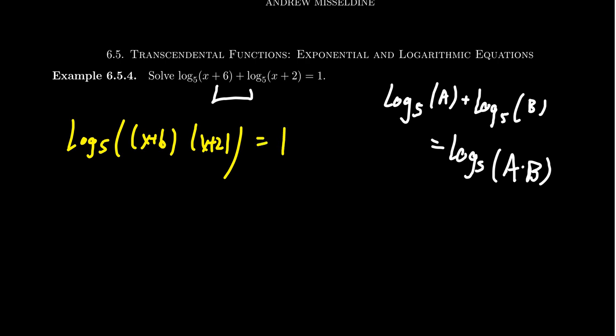The next thing we want to do is switch from logarithmic form to exponential form. We don't want the logarithm around because that's where the variables are. We've got to free them. To move log base 5 to the other side, we switch it to its inverse operation, the exponential base 5. We're going to take 5 to the first, aka 5.